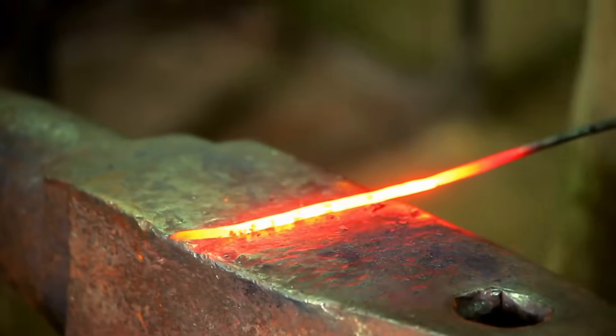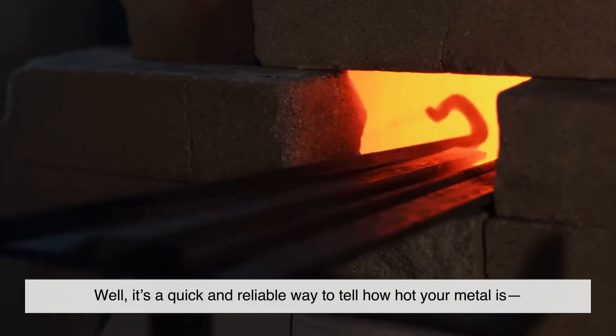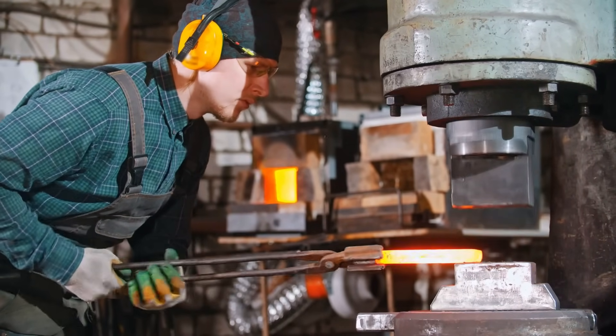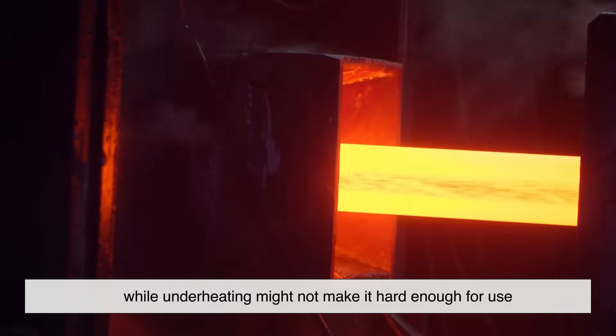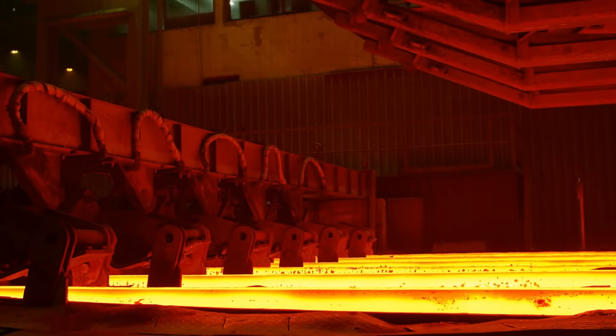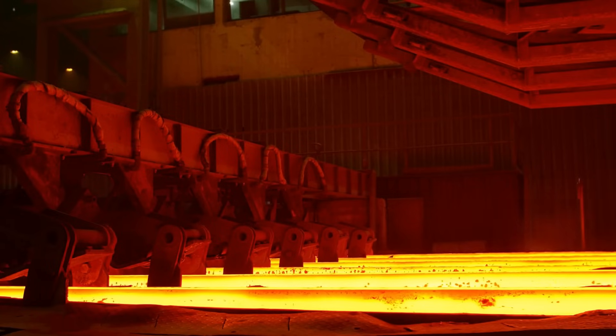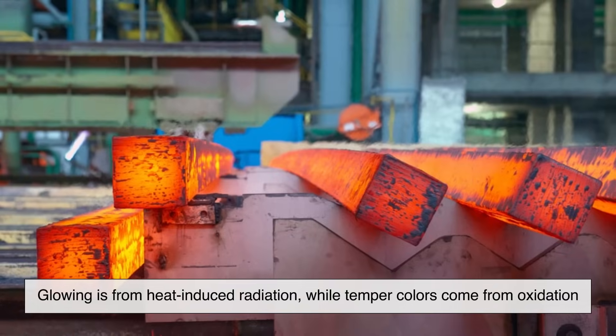Okay, so we know steel changes color due to heat, but why does it matter in the real world? Well, it's a quick and reliable way to tell how hot your metal is, especially before thermometers were common in workshops. Even today, experienced blacksmiths and metalworkers rely on color as a heat gauge. It's also crucial for safety—overheating steel can ruin its structure, while underheating might not make it hard enough for use. There are a few misconceptions out there too. One is that the glowing colors are the same as temper colors. As we've seen, that's not true. They happen at different temperatures and have different causes. Glowing is from heat-induced radiation, while temper colors come from oxidation.